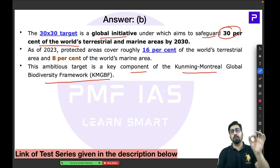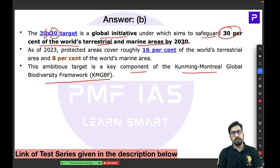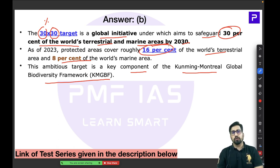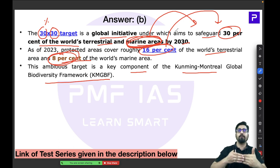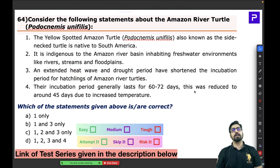The 30x30 global initiative aims to safeguard 30% of the world's terrestrial and marine areas by 2030. The '30x30' name reflects 30% protection by the year 2030. As of 2023, approximately 16% of terrestrial areas and 8% of marine areas are protected. The real challenge is increasing marine protection from 8% to 30% in the next six years — a significant undertaking.